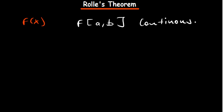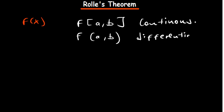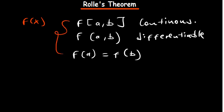The second condition is that the function should be differentiable on the open interval (a, b). For the closed interval, a and b are also applicable, but when we talk about an open interval, we're just interested in the range strictly between a and b. The third condition is that f(a) should be equal to f(b).